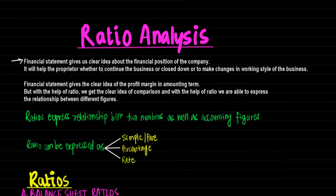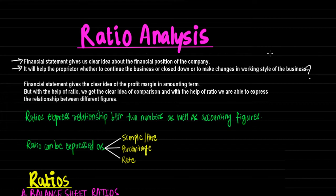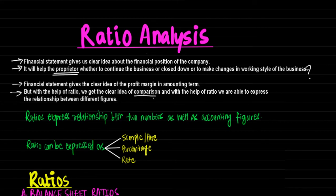Financial statements give us a clear idea about the financial position of the company. It will help the proprietor whether to continue the business, close down, or make changes in the working style of the business — by knowing the profit, assets, and liabilities of the company. Financial statements give a clear idea of the profit margin in amount terms, but with the help of ratios we get a clear idea of comparison and are able to express relationships between different figures.